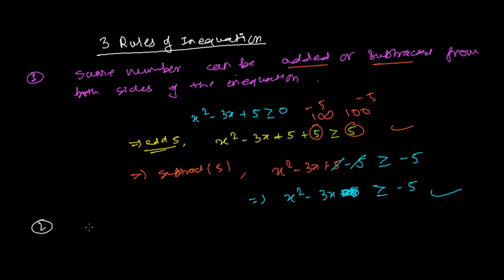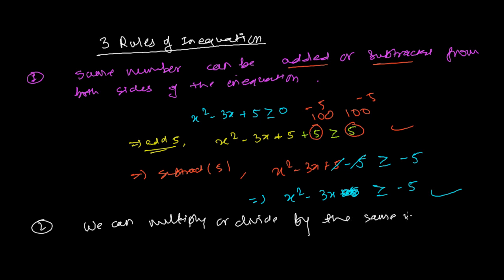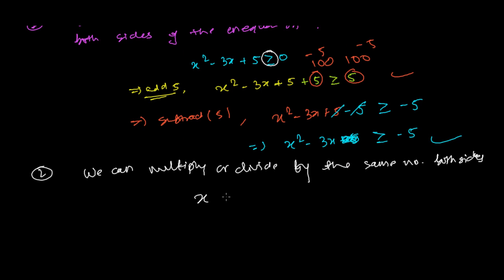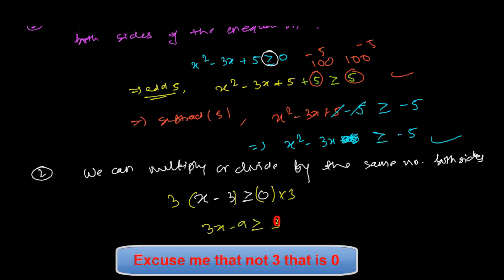The second rule is: we can multiply or divide by the same number on both sides without changing the inequality sign. For example, if I have x - 3 ≥ 0, I can multiply both sides by 3, giving 3x - 9 ≥ 3. The sign does not change — it remains greater than or equals to.